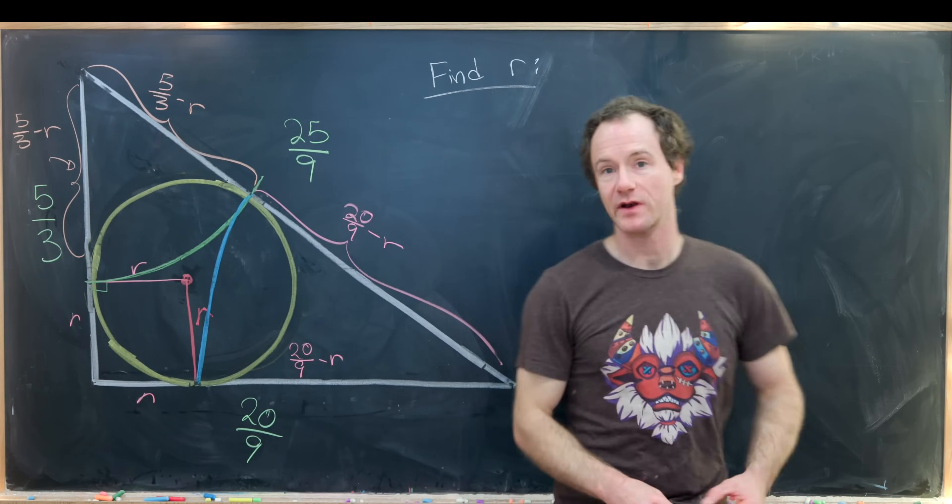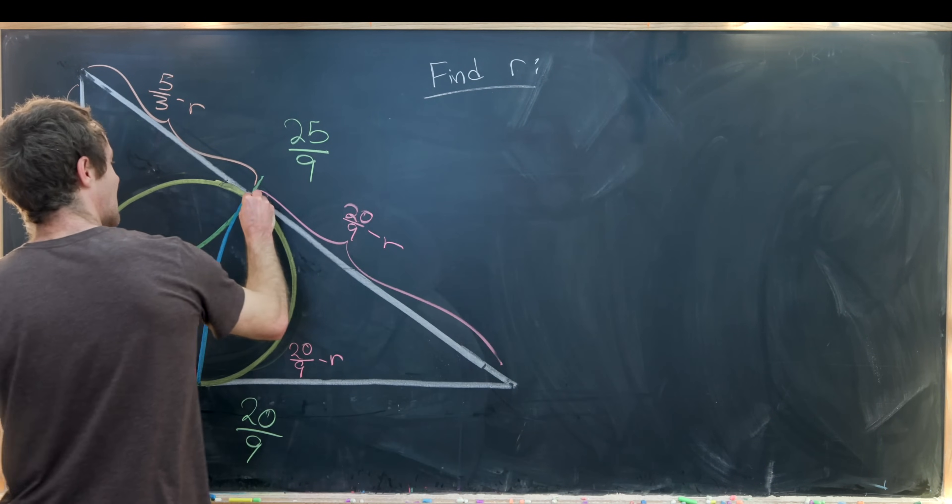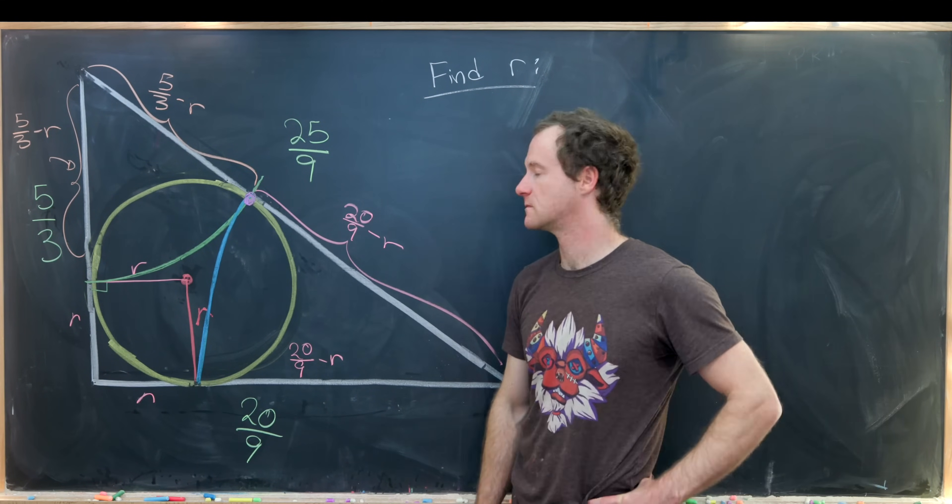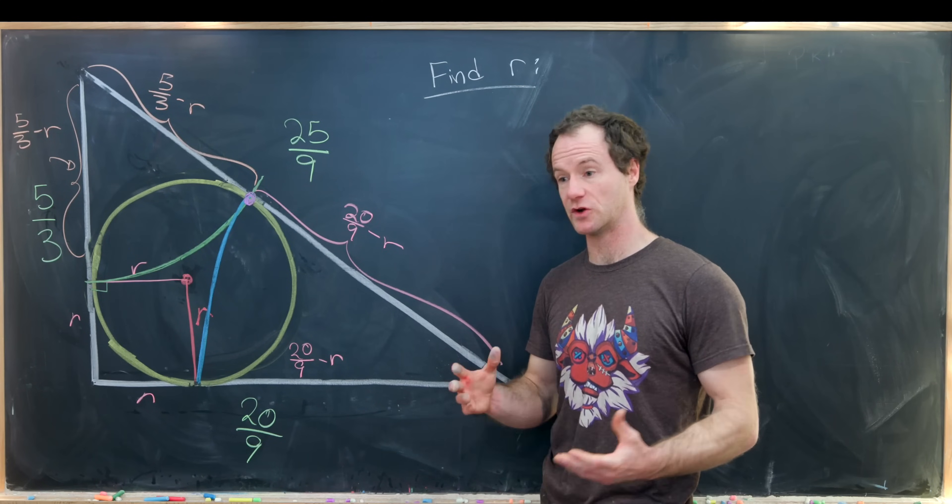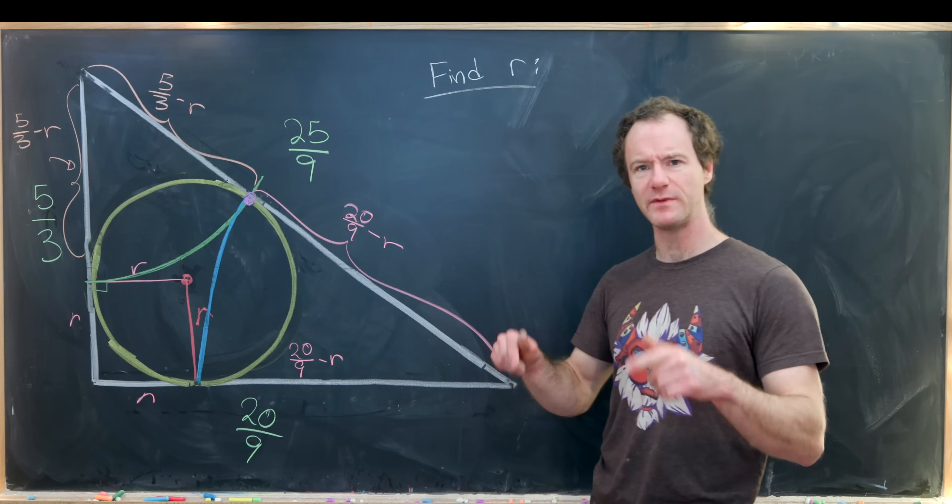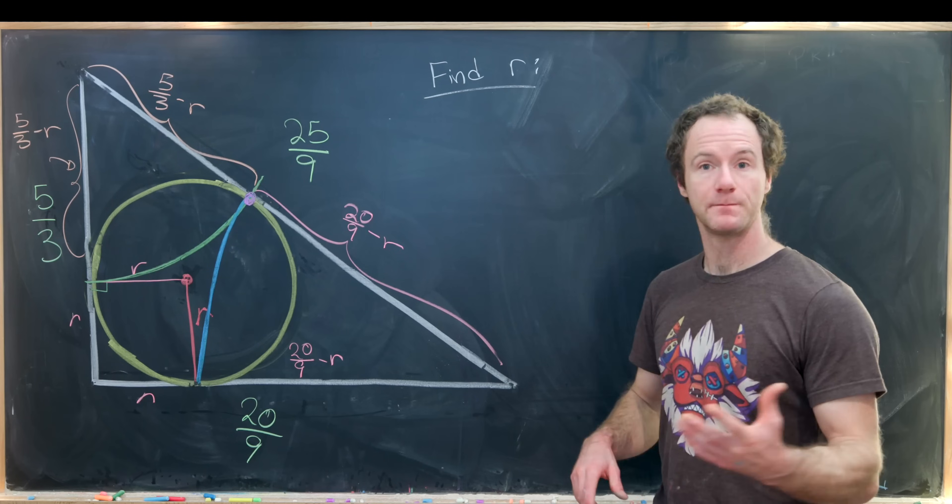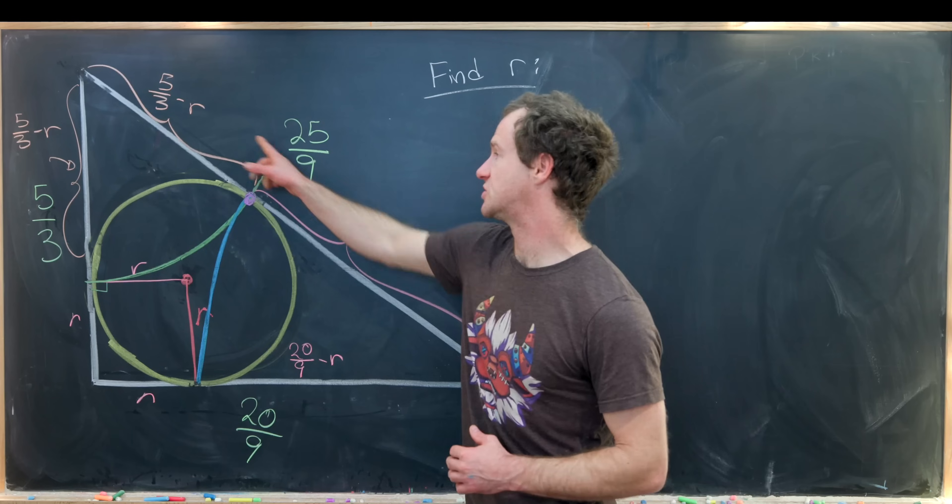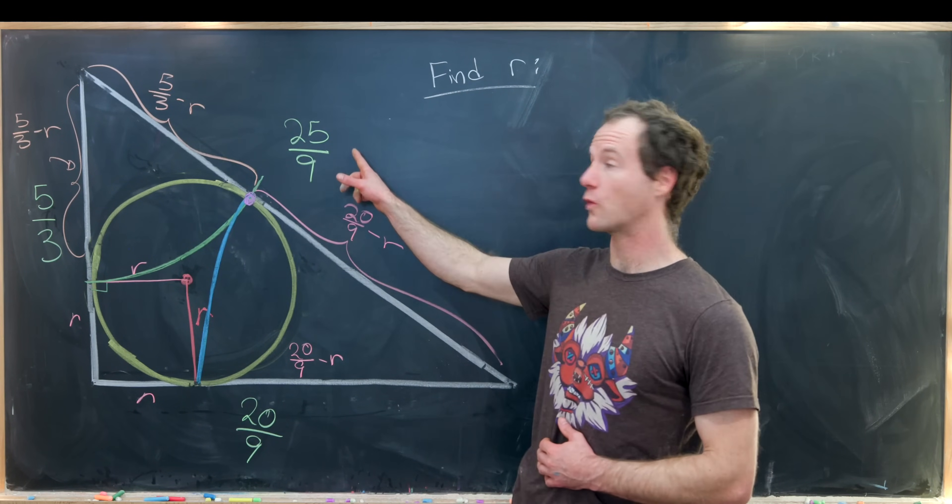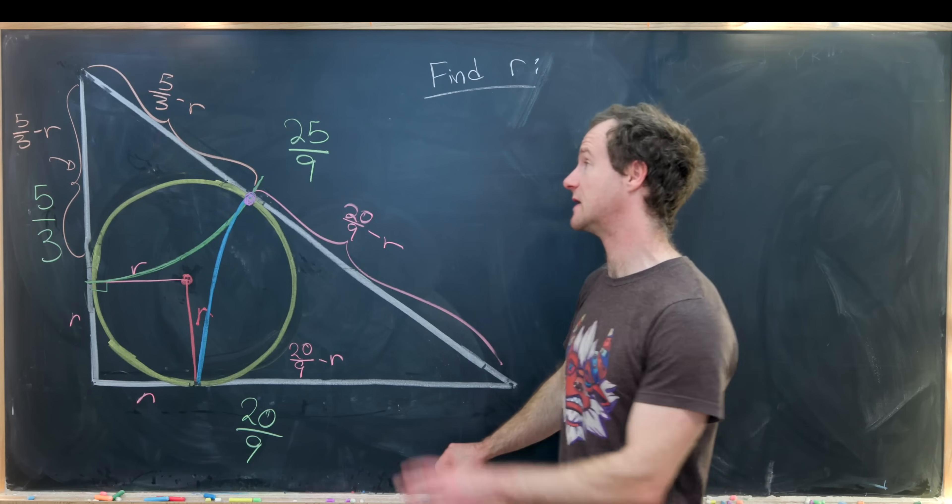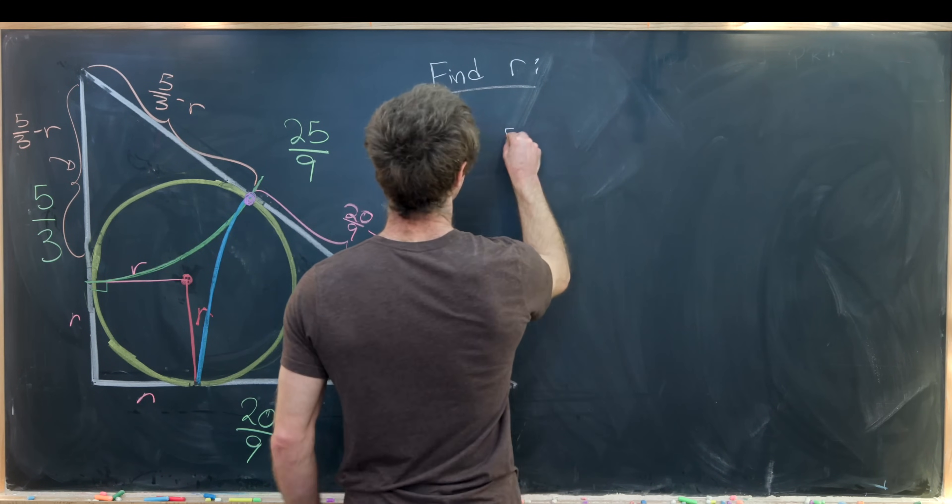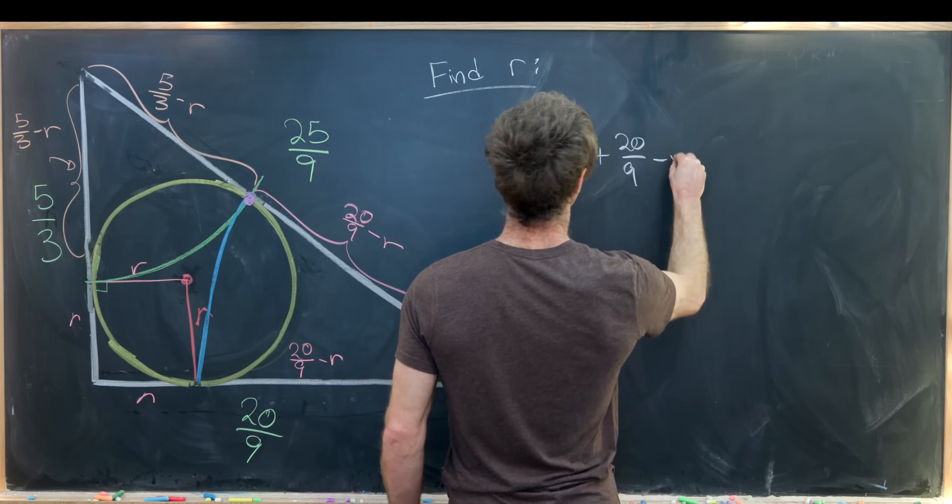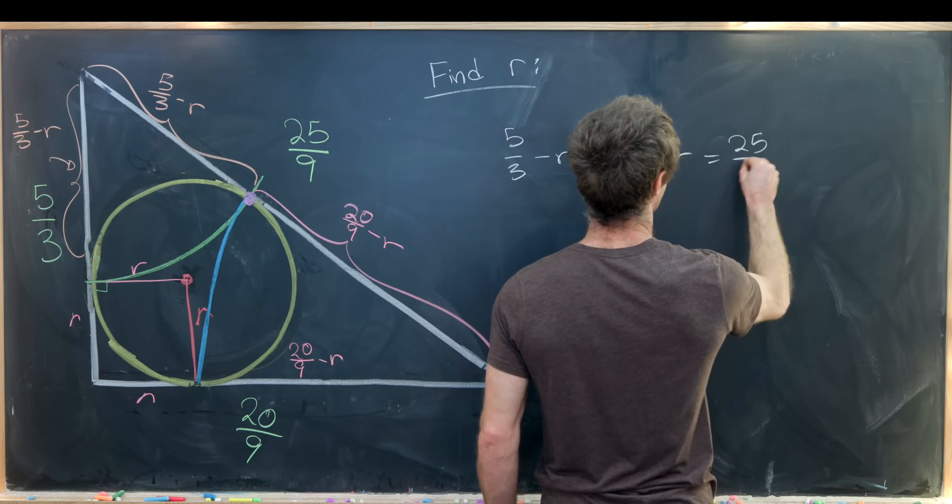Now the really important thing to point out here is that these two arcs of this circle intersect at a point. That follows from a fairly standard result known as the exterior tangent result. But now we can measure this hypotenuse two different ways: with these two constructed circles, or the way we had it before as 25 over 9. That sets up a nice equation. We've got 5 over 3 minus r plus 20 over 9 minus r equals 25 over 9.